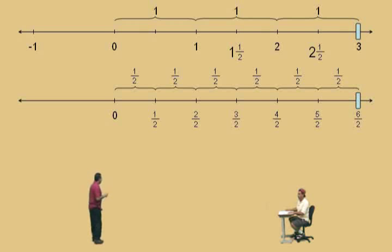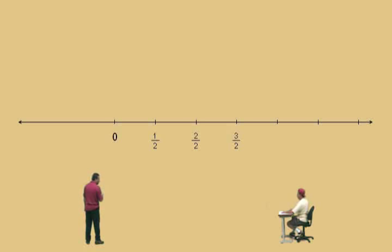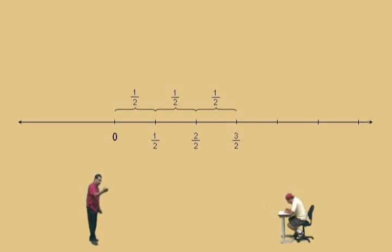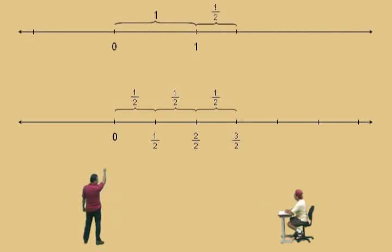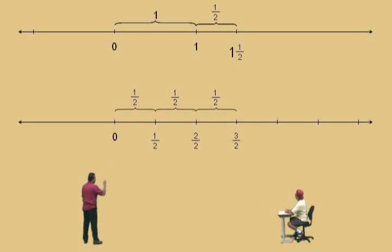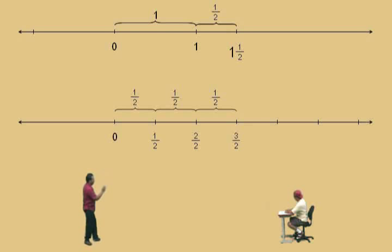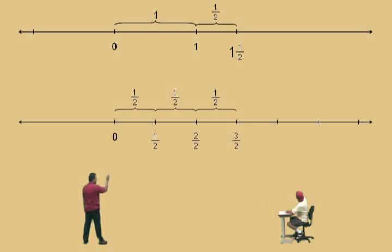Let's talk a little about that mixed number. We have three halves — one-half plus one-half plus one-half is three halves. It's like one apple plus another apple plus another apple is three apples, except we have halves. In mixed number notation, it's one and one-half, which is the same as three halves. How do you change a mixed number to an improper fraction? Three halves is an improper fraction because it represents a number bigger than one.